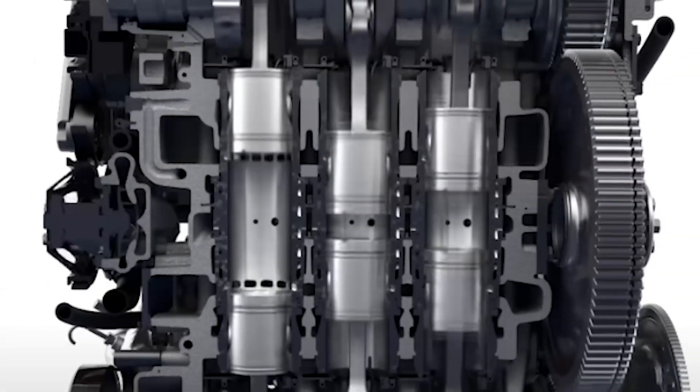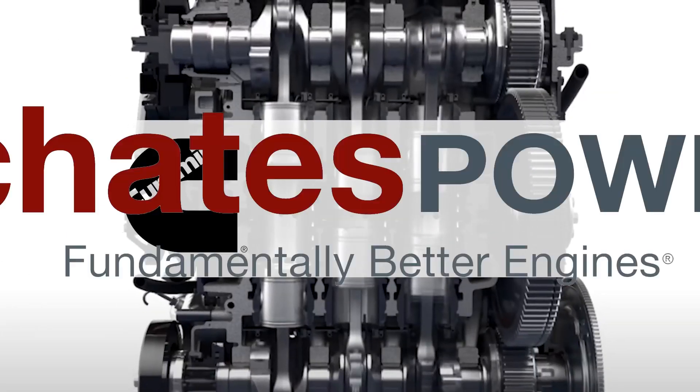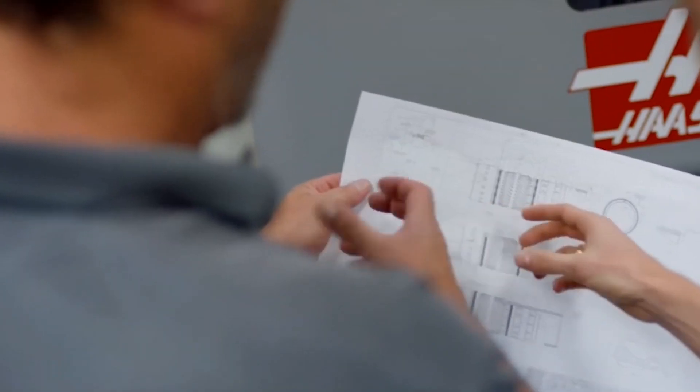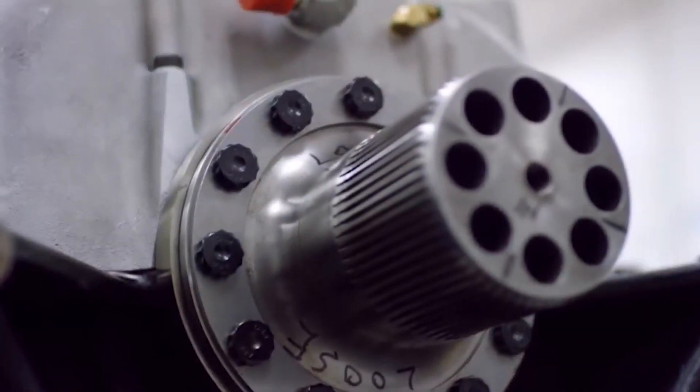Some notable manufacturers of opposed-piston engines include Fairbanks Morse, Cummins, and Achates Power. These companies have been at the forefront of developing and refining opposed-piston engine technology for various industrial and transportation purposes.